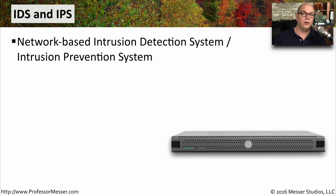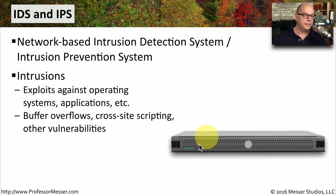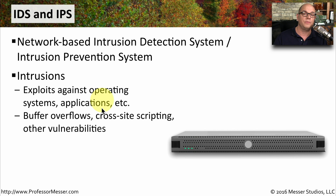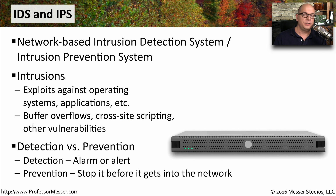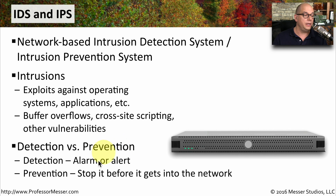Many exploits enter our environment across the network, which is why it's important to have a device looking for these. We can do that with a network-based intrusion detection system or intrusion prevention system. IDS and IPS services look for specific intrusion types such as known OS vulnerabilities, application exploits, buffer overflows, cross-site scripting, SQL injections, and much more. With an IDS, you can identify an intrusion and provide an alert, but you cannot stop it. With an IPS — prevention — when a vulnerability is identified coming through the network, it can stop that traffic before it gets inside.